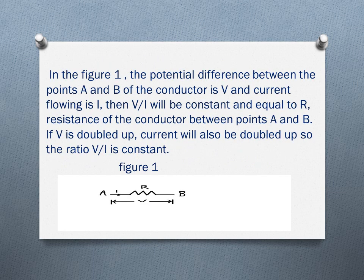For example, in the figure, the potential difference between points A and B of a conductor is V and the current flowing is I. Then V by I will be constant and equal to R, which is the resistance of the conductor between points A and B. If V is doubled, the current also will double, as they are proportional to each other. So the ratio V by I is constant, which is the resistance of the conductor.